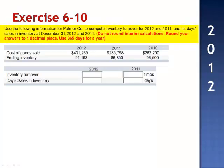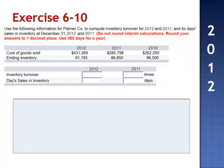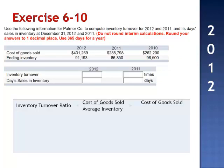Exercise 10. Use the following information for Palmer Company to compute inventory turnover for 2012 and 2011, and its day sales in inventory at 12/31/12 and 12/31/11. To calculate the inventory turnover ratio, we take cost of goods sold and divide it by the average inventory: cost of goods sold divided by beginning inventory plus ending inventory divided by 2.